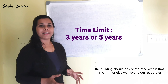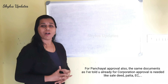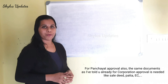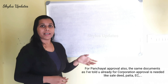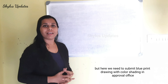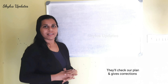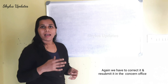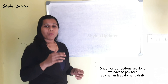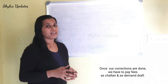The building should be constructed within that time limit, or else we have to get re-approval. For panchayat approval, the same documents as for corporation approval are needed — like sale deed, patta, and Encumbrance Certificate. But here, we need to submit a blueprint drawing with color shading at the approval office. They will check the plan and give corrections, which may require 2 to 3 rounds of correction. Each time, we have to correct and re-submit it in the consultant office. Once all corrections are done, we have to pay the fees as challan and demand draft.